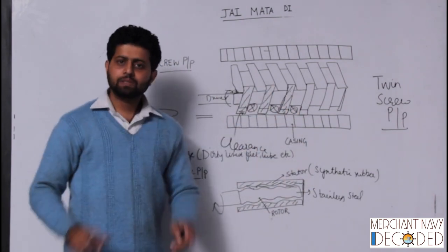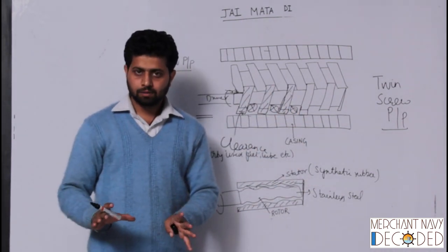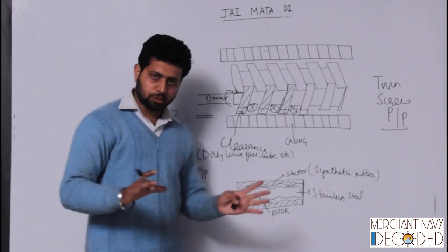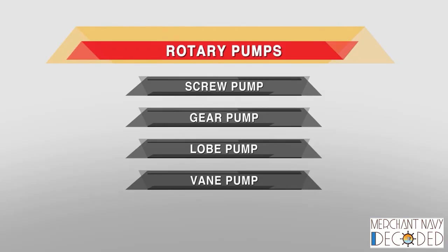So when this rotor is rotating, basically it is creating a suction and then carrying forward oil along with it, and then creating discharge. Simple mechanism. That's all. It is about a sludge pump. Rotary pumps are of four types: screw pump, gear pump, lobe pump, and vane pump, where screw pumps and gear pumps are used for transferring fuel oil and lube oil on ships.